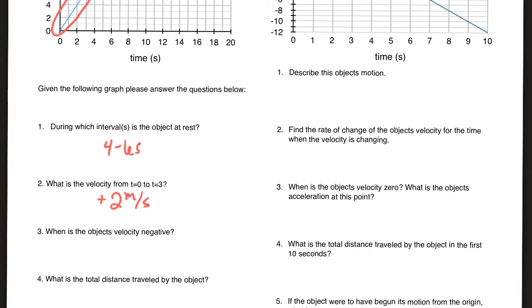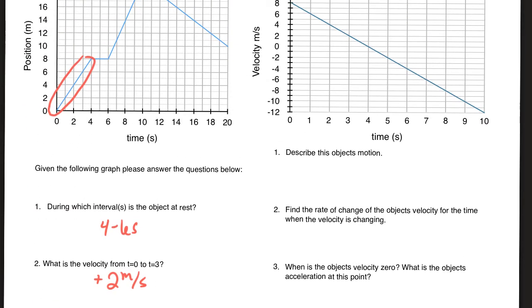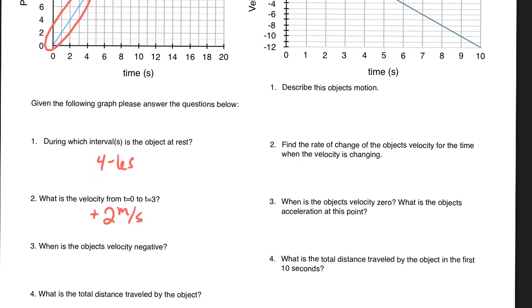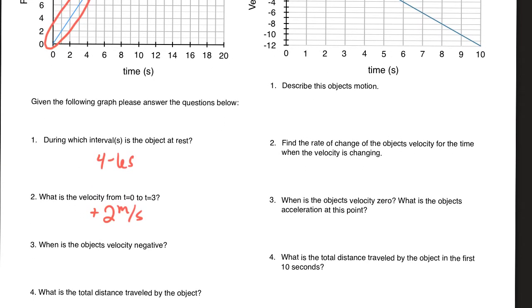What is the object's velocity negative? Anytime the slope is negative. From this graph, it's from ten seconds to twenty seconds, so I'd put ten to twenty seconds.